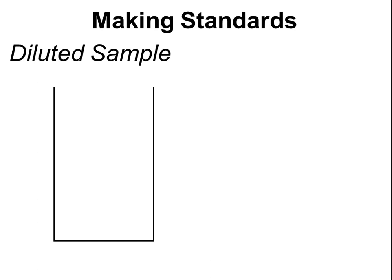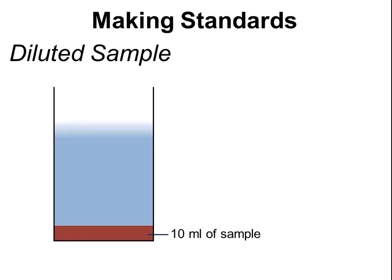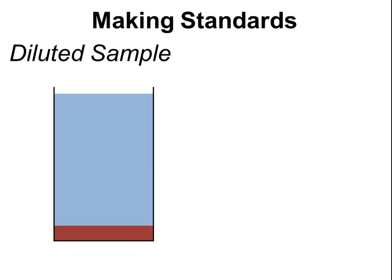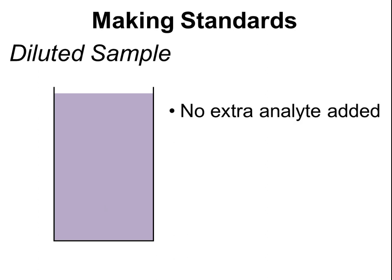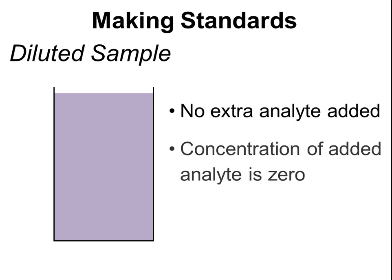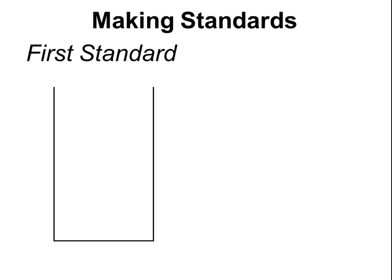Moving on to making the standards, the first solution we have to make is a diluted sample. In this case, we're going to put 10 ml of the sample in and 90 ml of water to make that up to a total of 100 ml, and give it a stir to make sure it's well mixed. In this situation, there's no extra analyte been added, and the concentration of the extra analyte added is zero. We refer to this sample as having a spike of zero millimolar — the spike is the concentration of analyte that we have added.